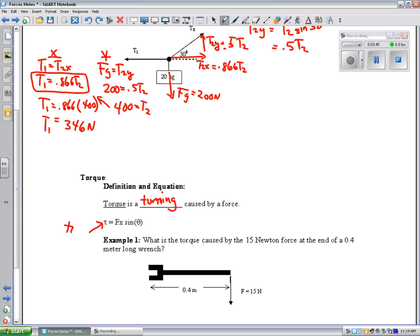This curly T stands for torque. F is the force you're putting on it, X is the distance, and then there's the angle between them.